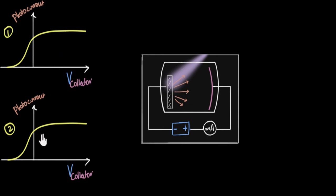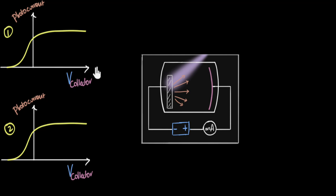The reason I have two graphs is because we'll do two cases. Before we start, let's quickly recap what this graph was all about. On the horizontal, we have plotted the voltage of the collector plate, and on the vertical, we are plotting the current.